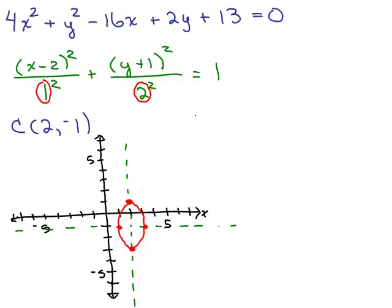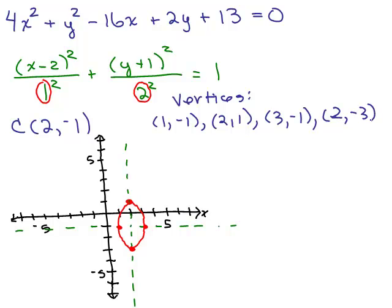I also asked to write the vertices. So let's state the vertices. We've got 4 of them. This one is 1, negative 1. This one is 2, 1. This one over here is 3, negative 1. And one down here is 2, negative 3.